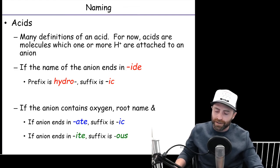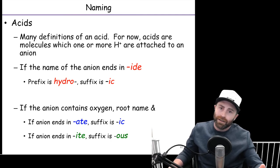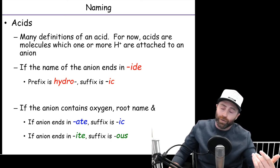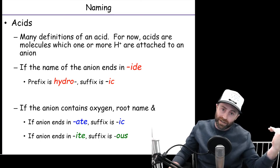If that ending is -ite, then for nitrite, you would kill the -ite, so nitr- and -ous, nitrous acid.